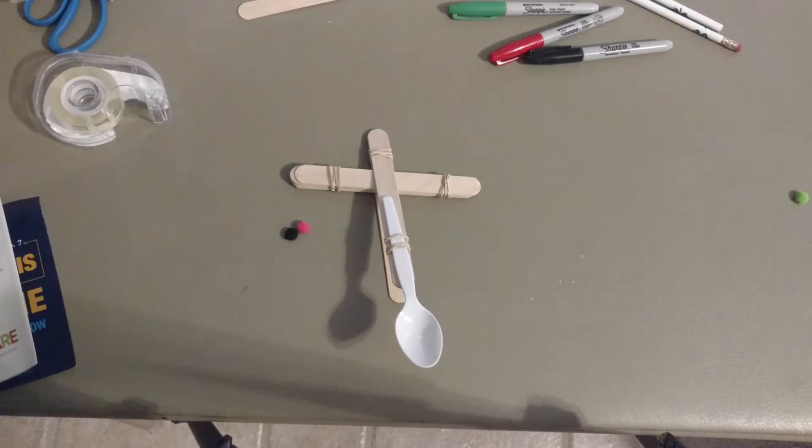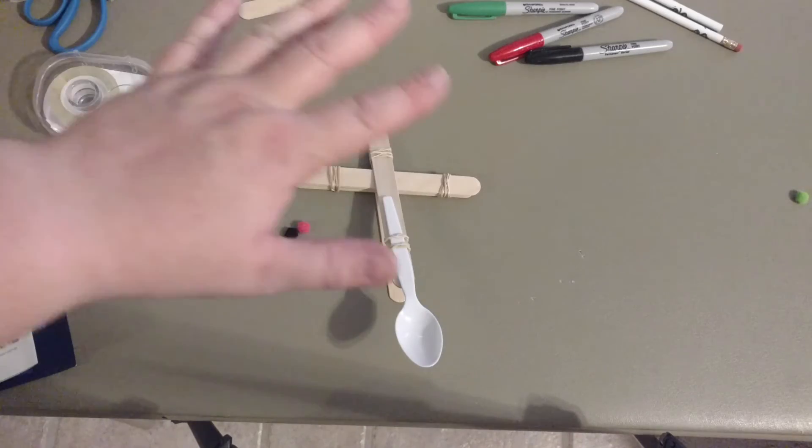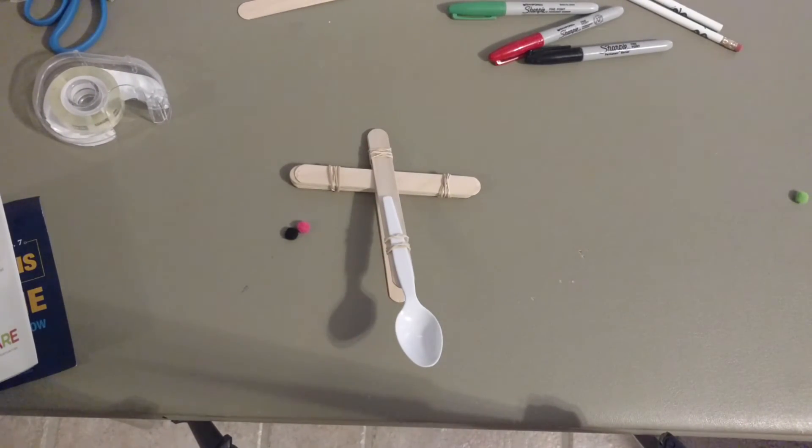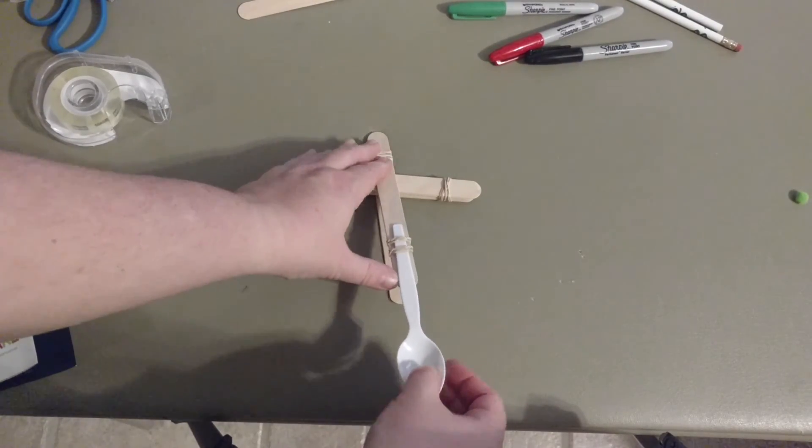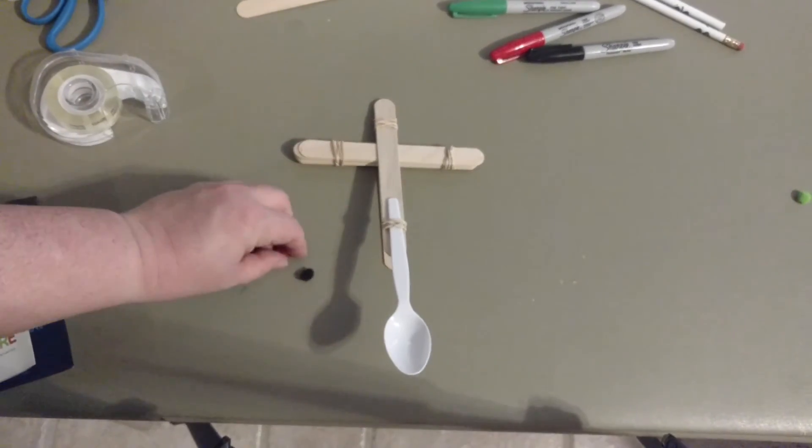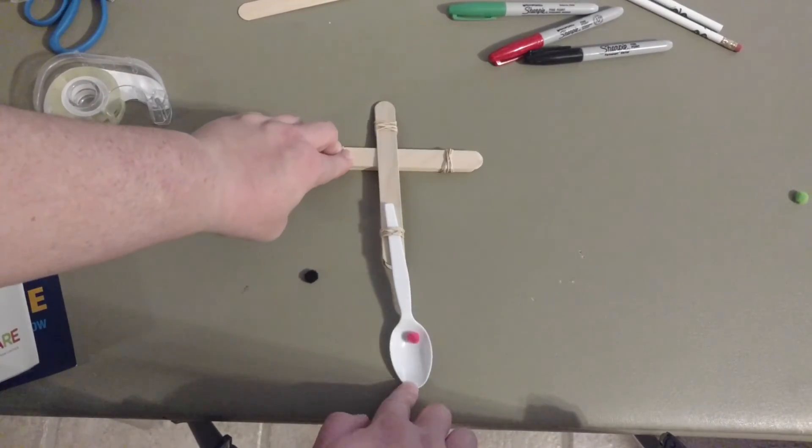This is where the whole STEM process comes in, especially the engineering process, where we may have to go back and reimagine our prototype here. There's some things I could do. Maybe I could use different rubber bands. Maybe I could change the position of my spoon. That's always something we could do and move the spoon a little further out. Let's try it with another one with the pink one.